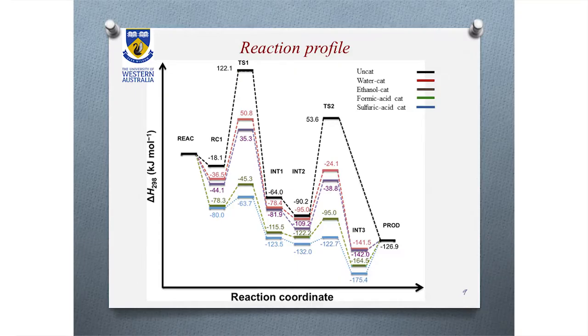This slide shows all the reaction profiles for this reaction. You will see results for uncatalyzed, water-catalyzed, ethanol-catalyzed, formic acid-catalyzed, and sulfuric acid-catalyzed cases. Sulfuric acid catalyzes this reaction very efficiently, reducing the barrier from around 140 kJ/mol to 20 kJ/mol, which is considerable for both steps of this reaction.